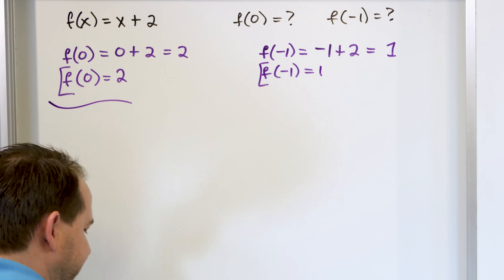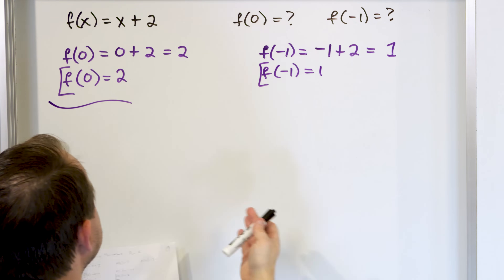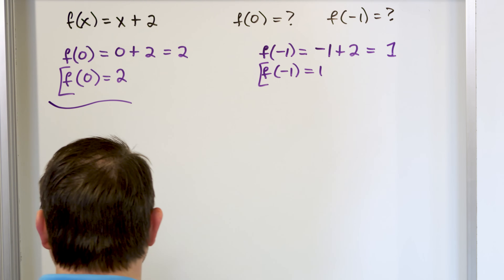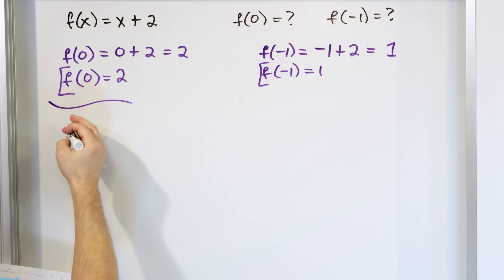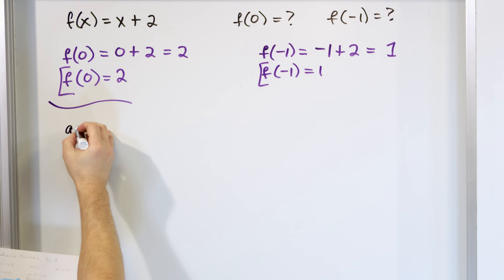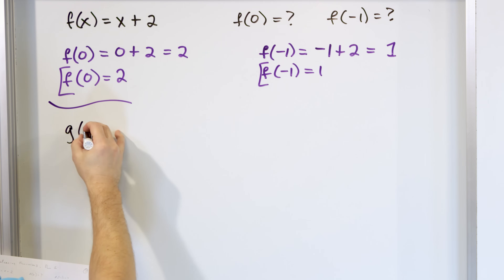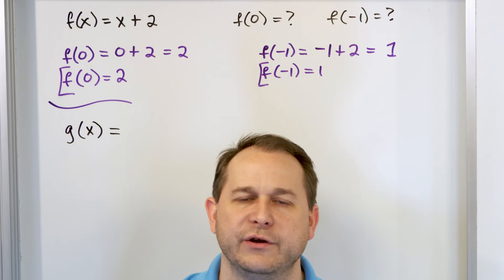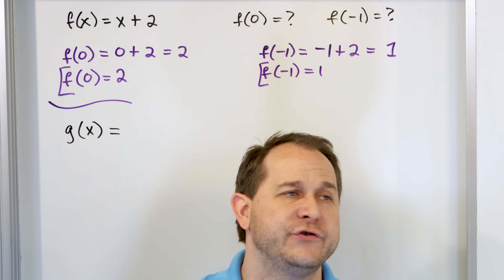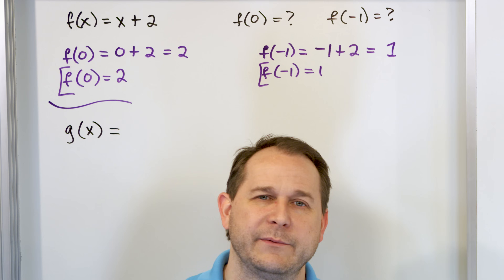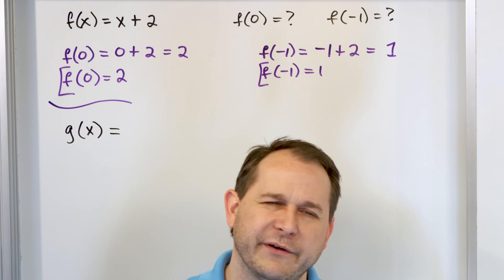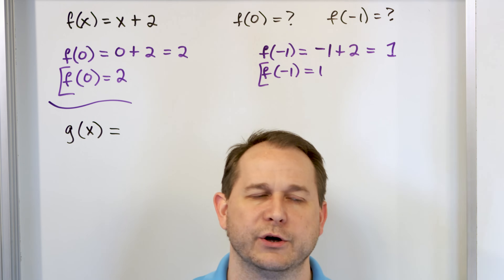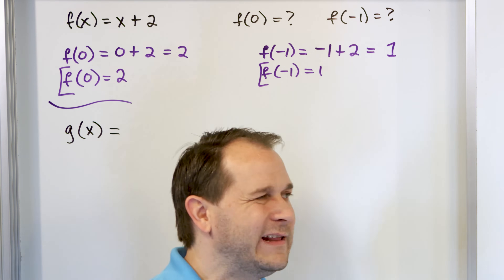We're just going to continue working down. This is mostly an exercise in substitution, but we're getting used to the idea of what a function is. You also very commonly will see the letter g to represent a function. It doesn't matter what letter you use, but typically you'll see f and g. In physics sometimes you'll see u and v, but almost always in algebra it's going to be f, sometimes g of x.